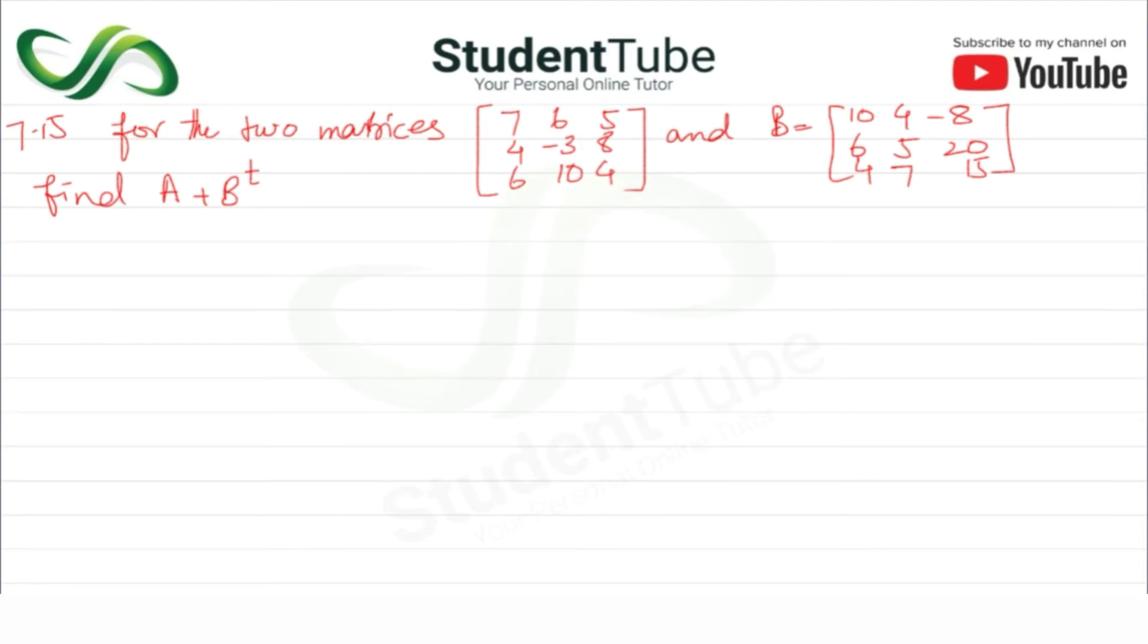First, we will find B transpose. B transpose is equal to [10, 4, -8, 6, 5, 20] and [4, 7, 15]. This is the transpose of matrix B.